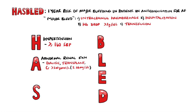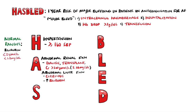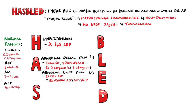Abnormal liver function is defined as having cirrhosis, or having bilirubin levels above 2 times the normal range, which is normally less than 21 micromoles per litre or 1.2 milligrams per deciliter. Other lab markers indicative of liver damage include AST and ALT, which stand for aspartate transaminase or alanine transferase, and alkaline phosphatase levels above 3 times the normal range. There is one point available for each of abnormal renal function and abnormal liver function.